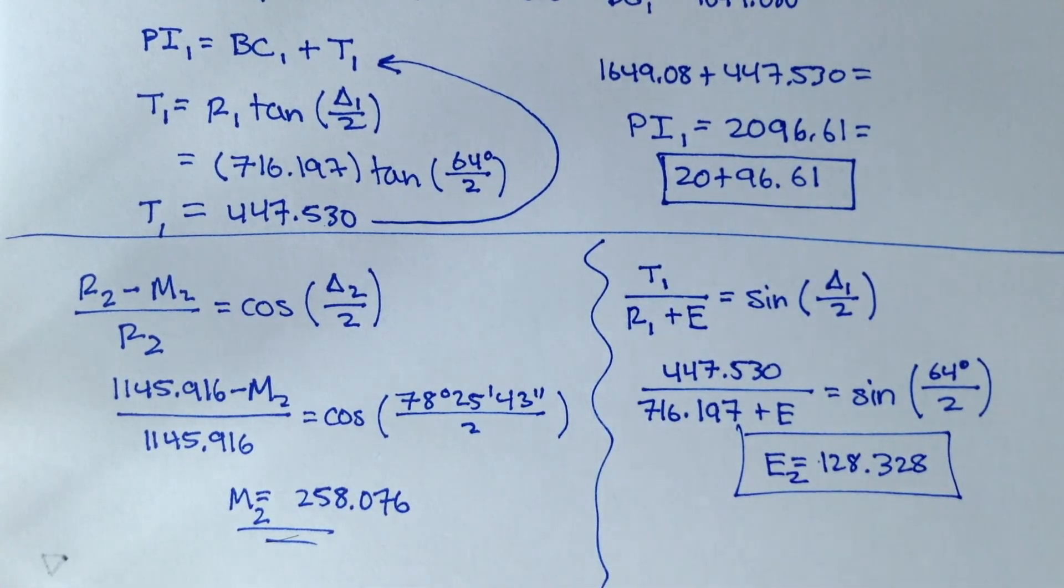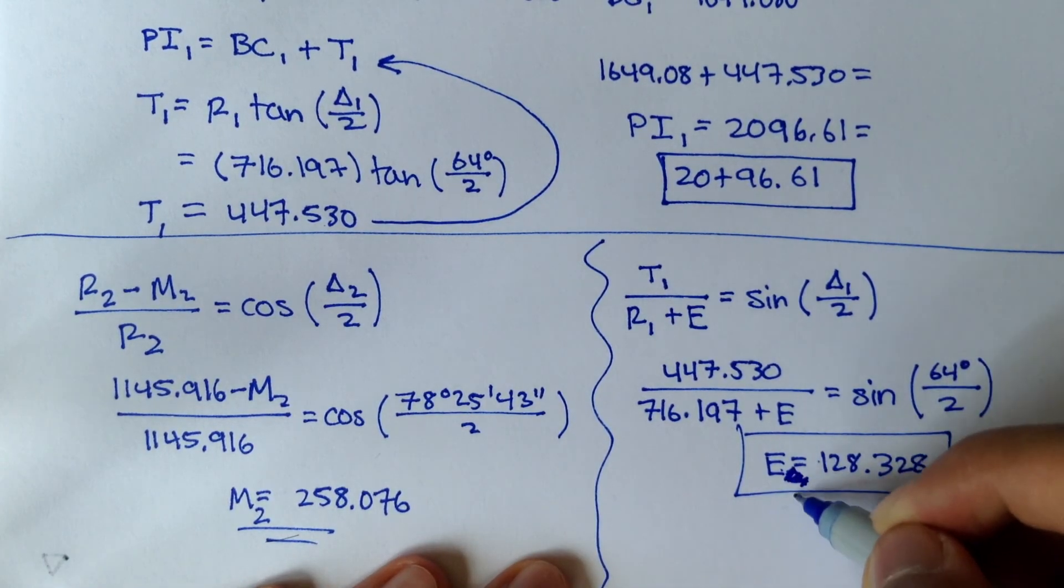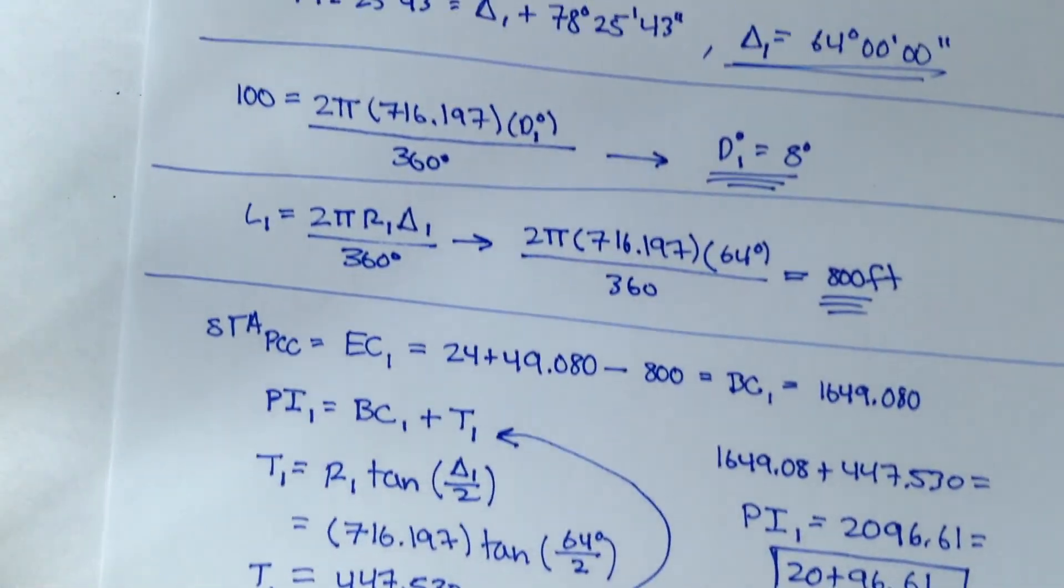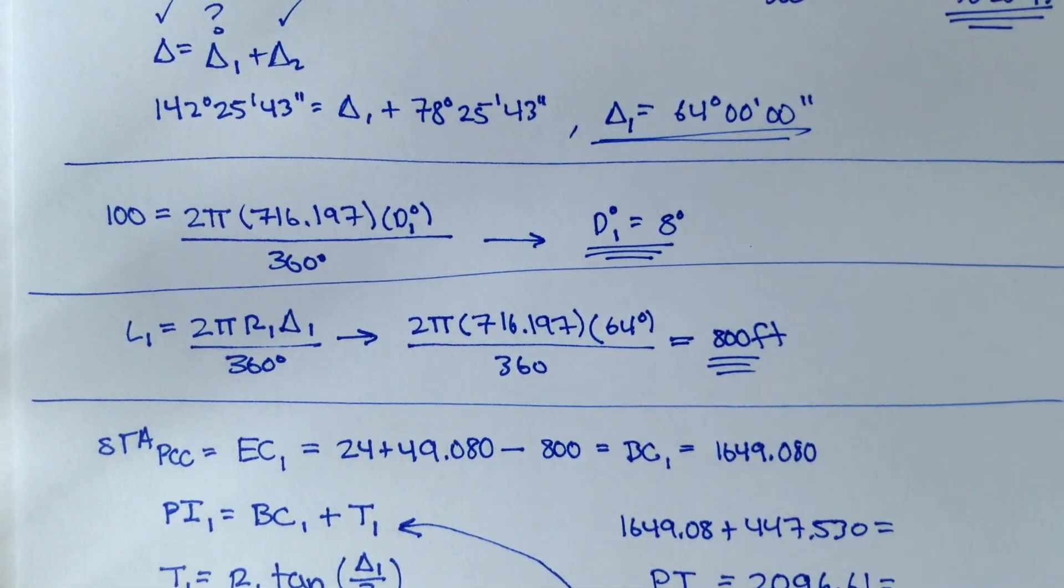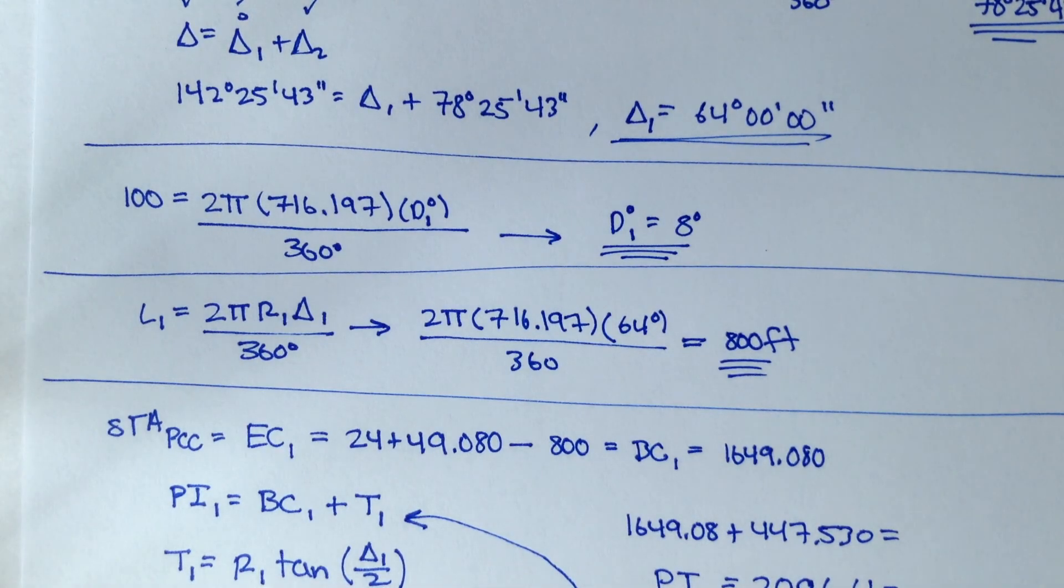or I'm sorry, this is external distance for curve 1, middle ordinate for curve 2, and we figured out a bunch of other things. So really, remember, compound curves, they're just two horizontal curves put together, all right?